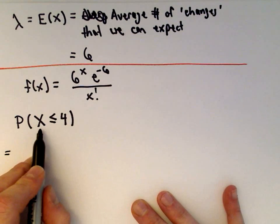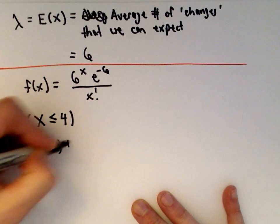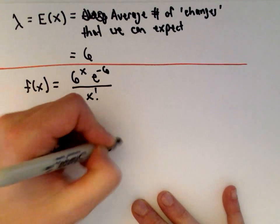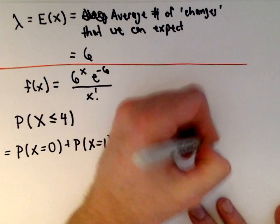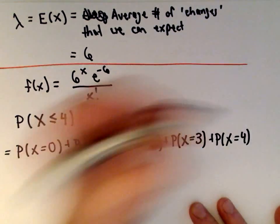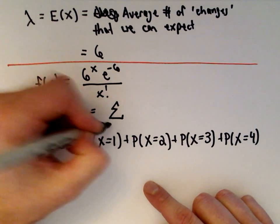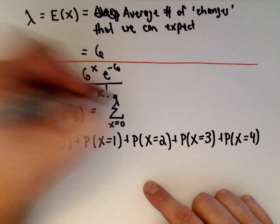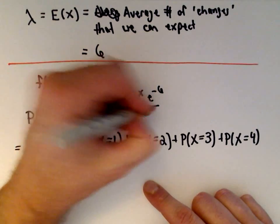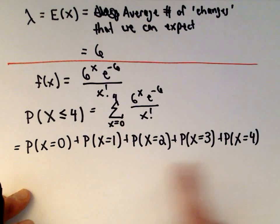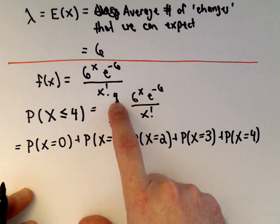To calculate P(X ≤ 4), we sum: P(X=0) + P(X=1) + P(X=2) + P(X=3) + P(X=4). Using summation notation, that's the sum from x=0 to 4 of (6^x · e^(−6)) / x!. The upper value above the sigma is four.